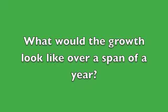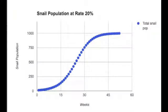At a growth rate of 20%, we only see a couple of snails added within the first two weeks. We can expect the growth to look like a logistic model that evens out at the carrying capacity of 1,000 snails.